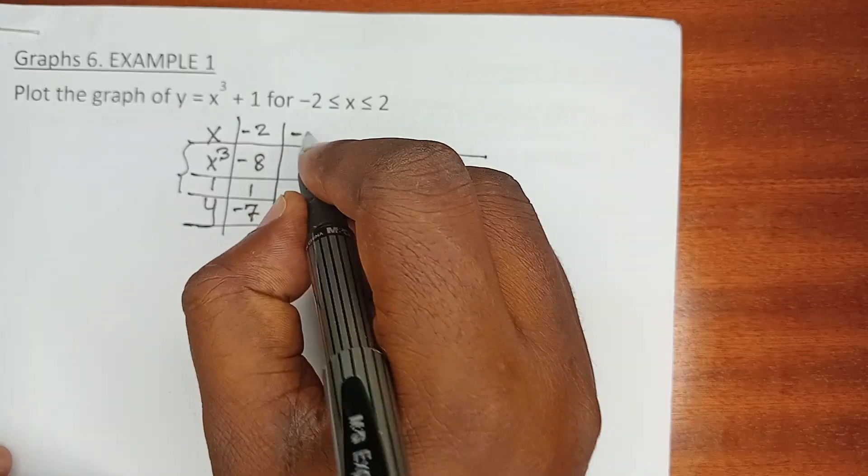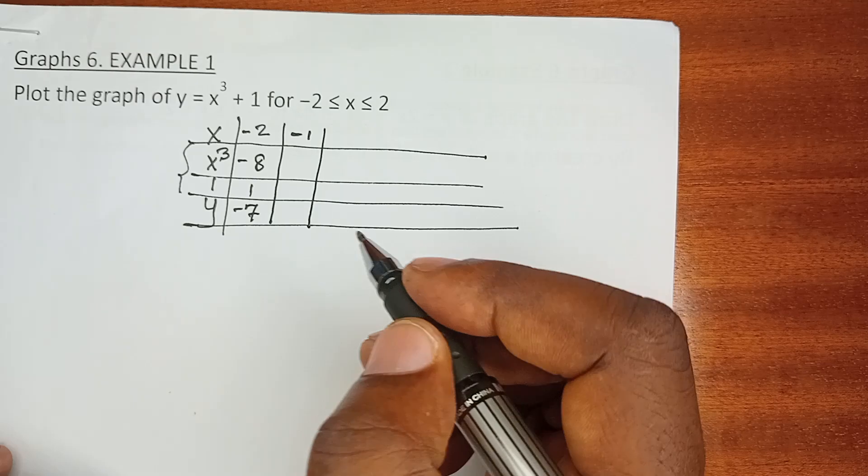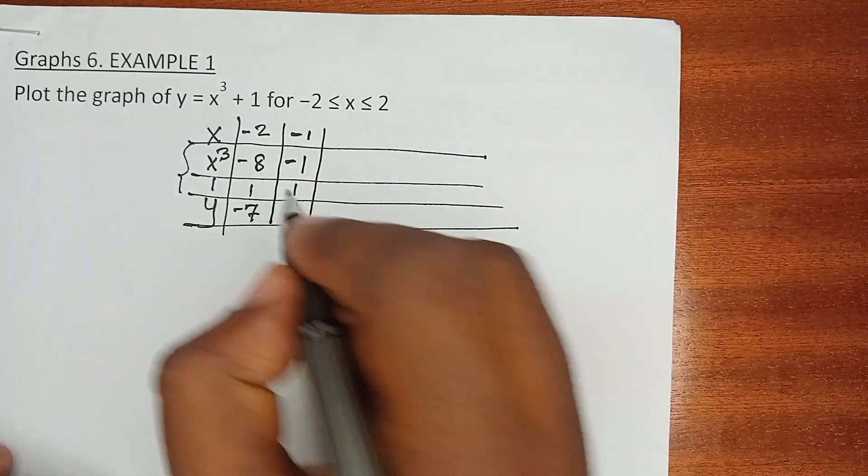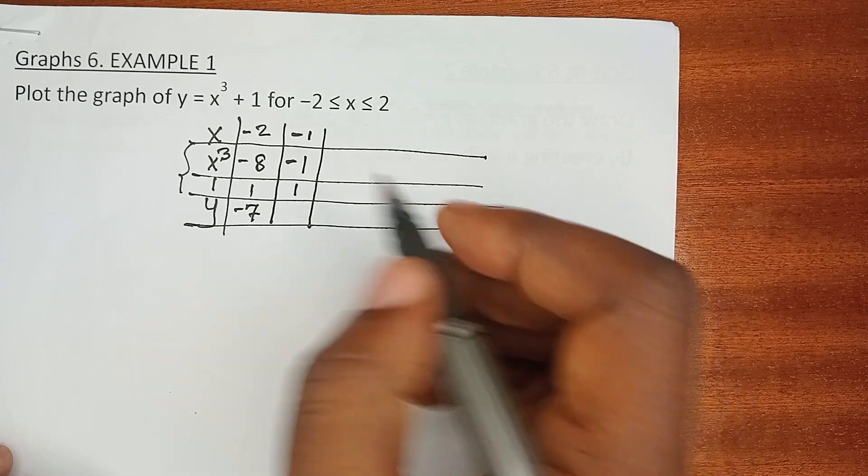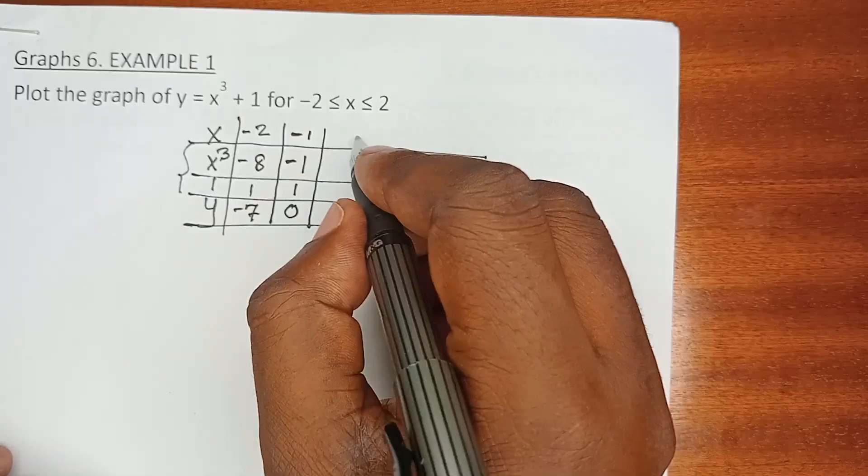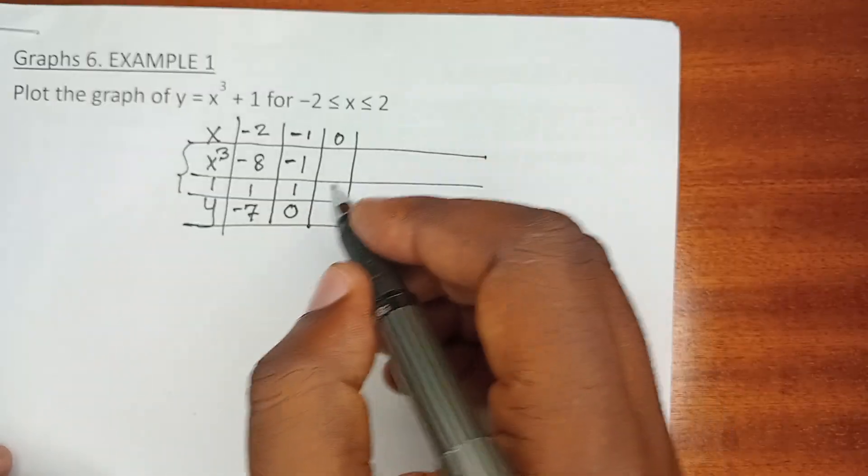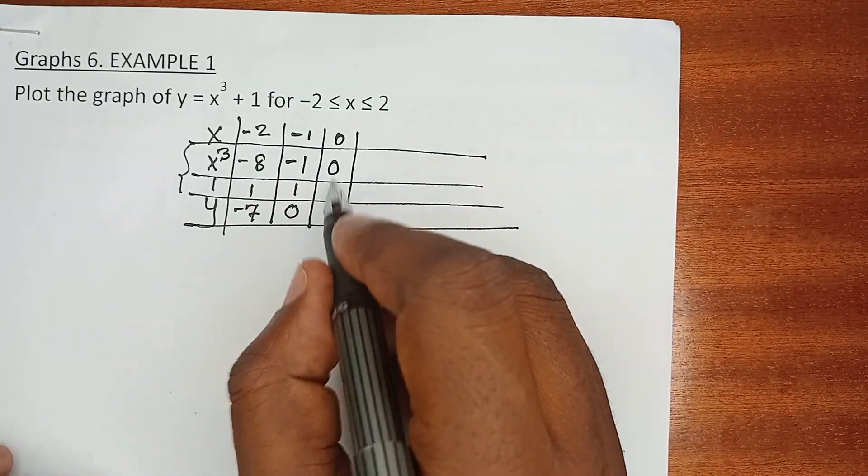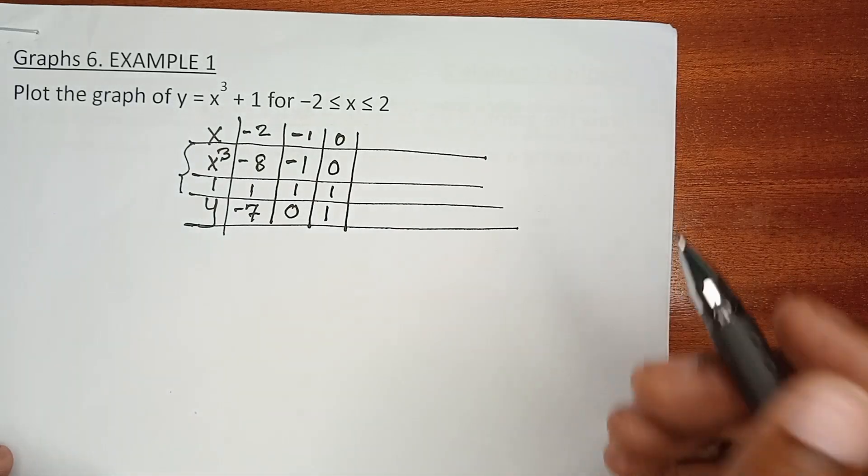When x is negative 1, we have x cubed being equals to negative 1. 1 is still a constant, and the two rows added together will give us 0. When x is 0, x cubed is 0, 1 is a constant, and the two rows added together will get 1.